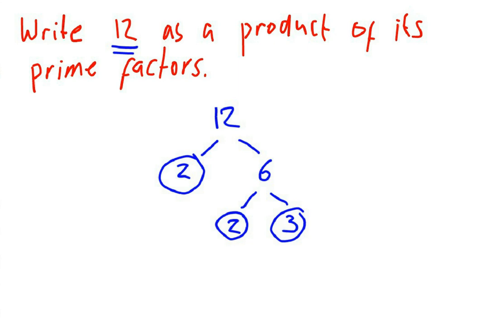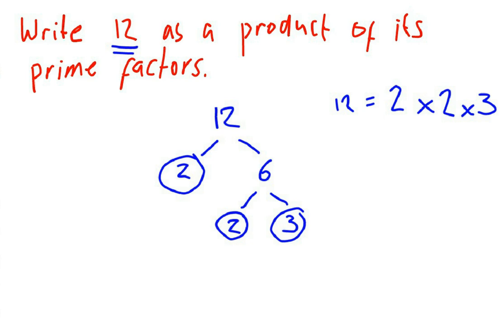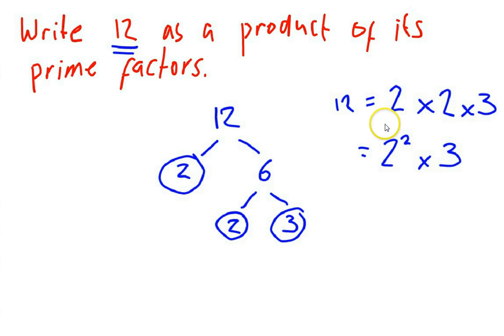So as a product of its prime factors, 12 is equal to 2 times 2 times 3. I suggest you write it out in full like this first, and then you can see that 2 times 2 is actually 2 squared times 3. Write it out in full, and then if you can simplify any of the powers, do that underneath as well. Make sure you can write 12 as a product of its prime factors like this.